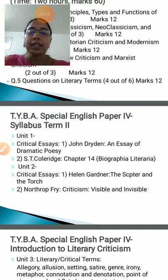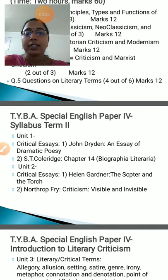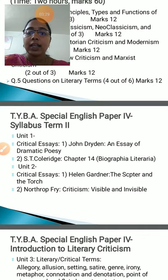In unit number two there are two critical essays. The first is Helen Gardner's The Scepter and the Torch, and the second is Northrop Frye's Criticism Visible and Invisible.